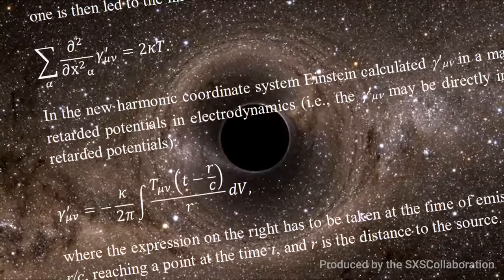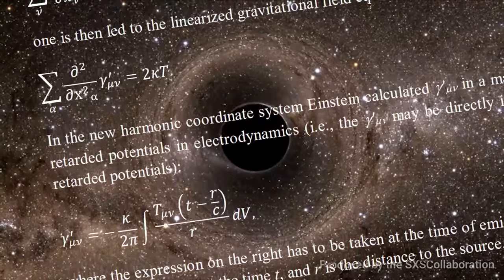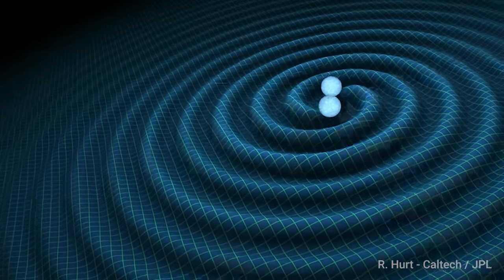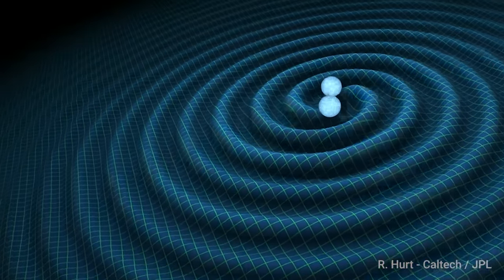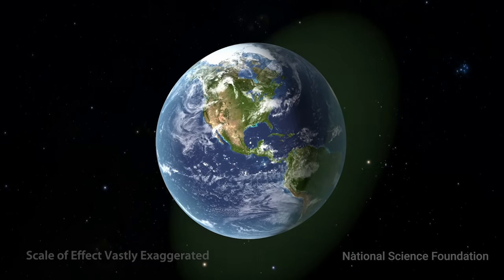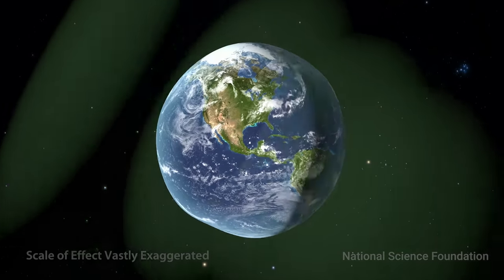When Einstein first predicted gravitational waves in 1916, he thought they were a problem with his algebra. And then later, when he believed that they were real, he figured it would still be impossible to detect them. But of course, that hasn't stopped people from trying.